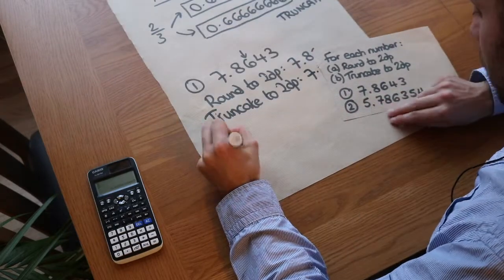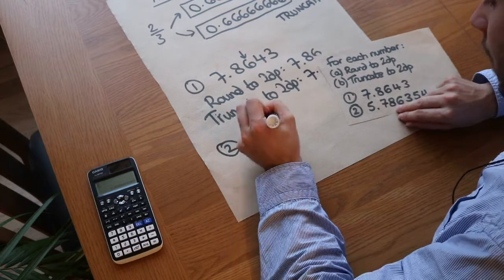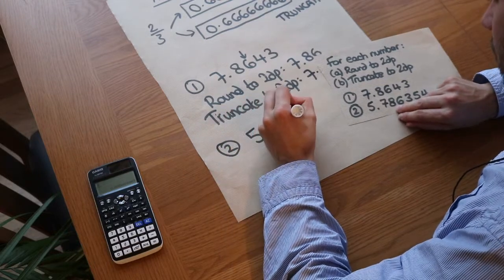But with the second one, we'll see that we get two different values. So we have 5.786354.